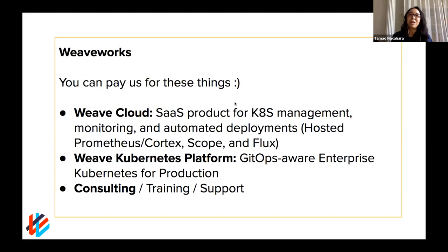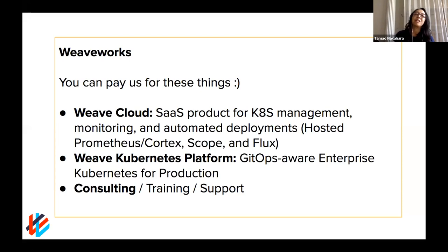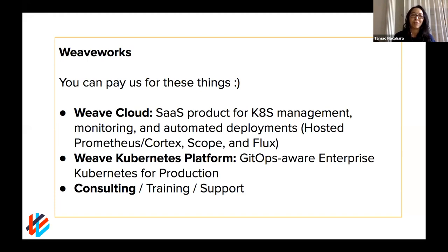We do also have paid products. You may know WeaveCloud, our SaaS product for Kubernetes management, monitoring, and automated deployments. It incorporates a lot of those open source projects, but hosts them and helps you run them without the underlying management and installation. We've been running WeaveCloud on Kubernetes on AWS for four years. Through that process, we discovered people desired the layer we created to install WeaveCloud, so we're productizing that as the Weave Kubernetes Platform — a very GitOps-aware enterprise platform. We also offer help, training, and support.